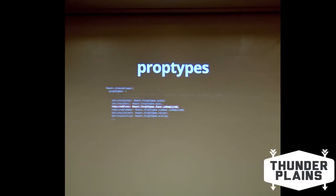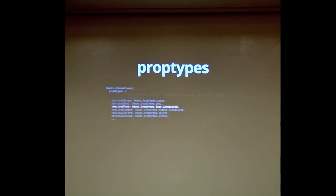Prop types are like a schema or a runtime contract, which is part of React, to put on your components. You declare prop types within your component and basically say this variable is expected to be of this type — it's going to be an array, a function, it's required. It's a little DSL for defining a schema or interface to your component.